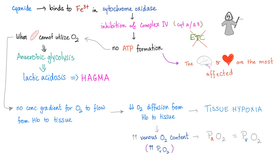Cyanide binds ferric in cytochrome oxidase, leading to inhibition of complex 4 — which is cytochrome A, A3. No ATP formation; the mitochondria cannot utilize oxygen. We shift to anaerobic glycolysis, which produces lactic acid, leading to lactic acidosis — specifically high anion gap metabolic acidosis. The normal anion gap is less than 12.